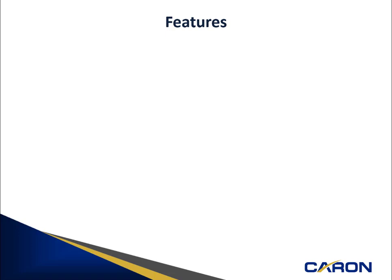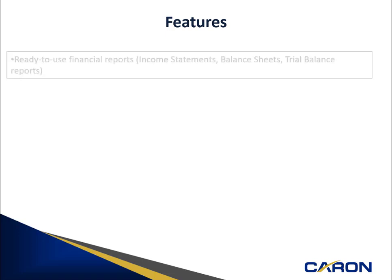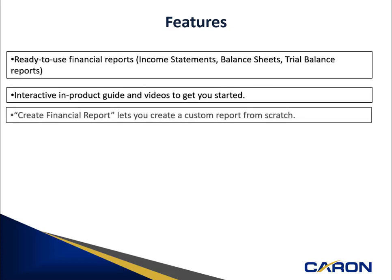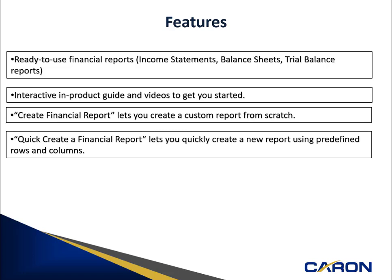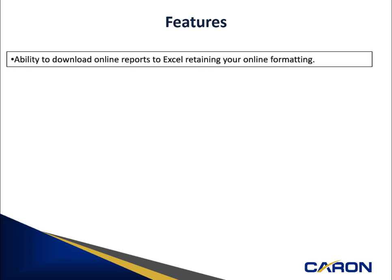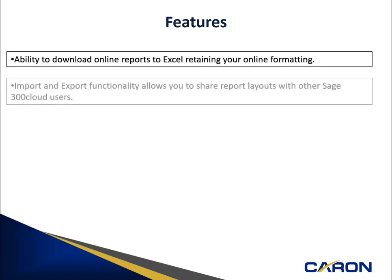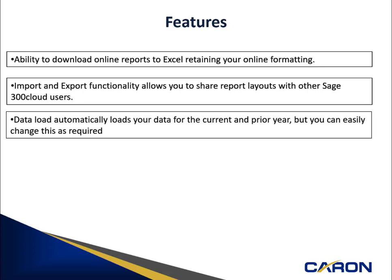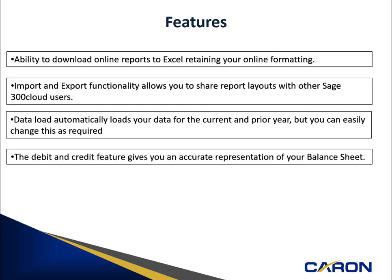Additional features that customers consider when purchasing Sage Intelligence are: ready-to-use financial reports; in-product guides and videos to help train users; creating financial reports from scratch; a quick-create feature which allows you to create new reports with pre-built rules; copy and edit, which allows you to customize ready-to-use reports; the ability to download online reports and retain the online formatting; import and export functionality, which allows you to share reports with other Sage users; and data load, which allows you to automatically load your current and prior year data, and debit and credit features that give you accurate representation of your balance sheet.